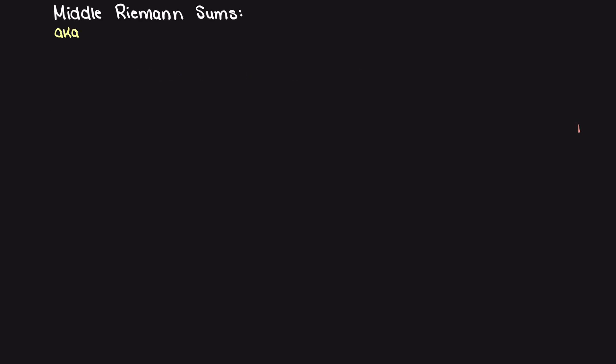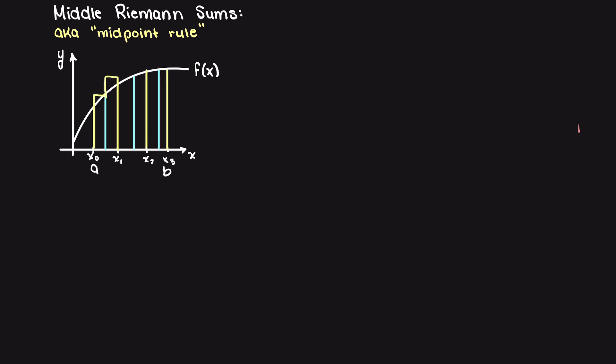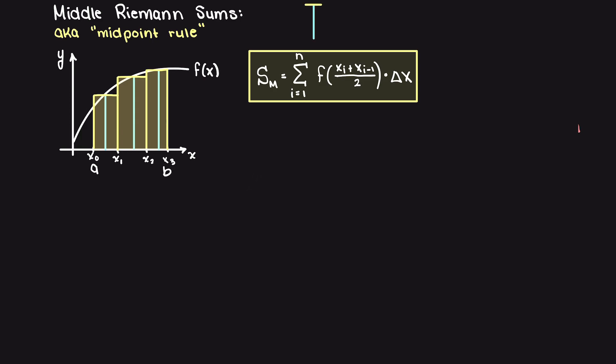Lastly, let's talk about middle Riemann sums, also known as the midpoint rule. Here, our area of each rectangle will be found by multiplying our base just like we did for the other two methods. And this will be multiplied by the output of the middle of a rectangle, hence the name midpoint rule.